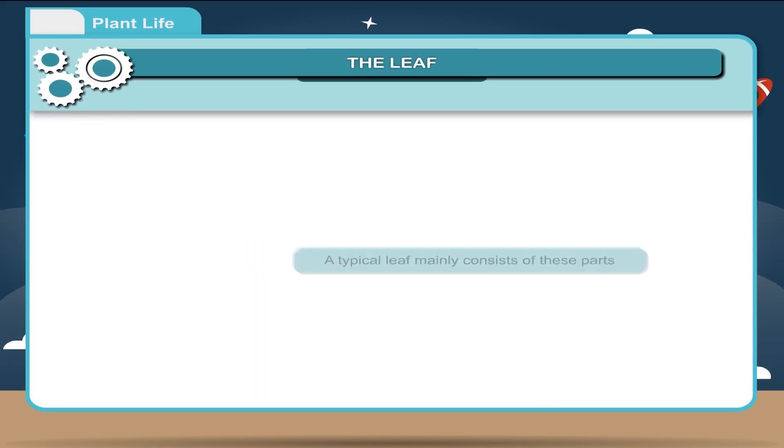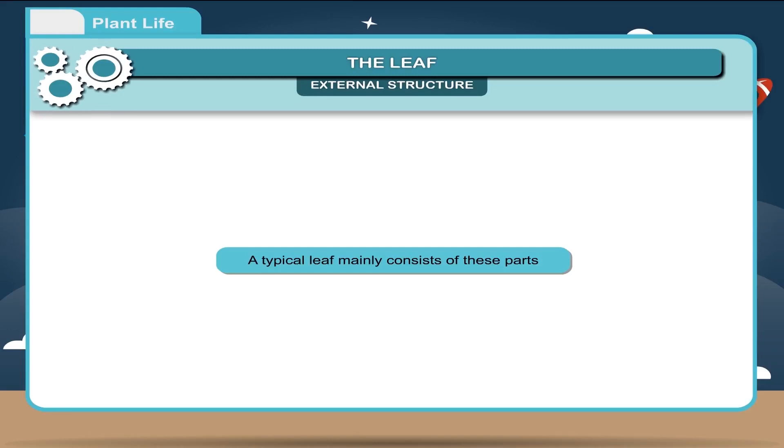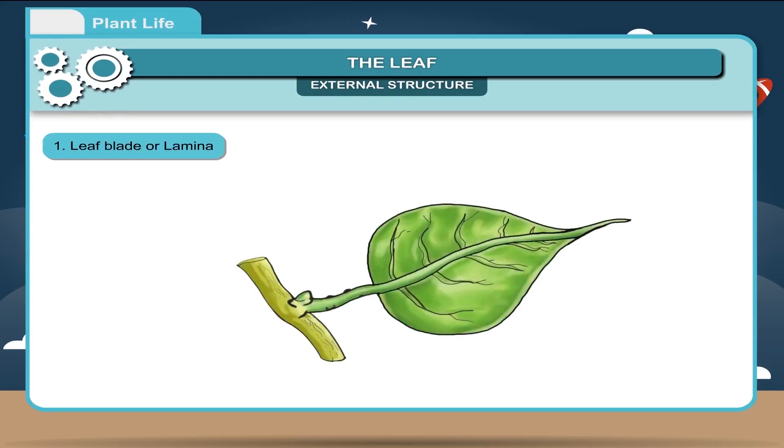External Structure: A typical leaf mainly consists of these parts. First, leaf blade or lamina. The flat, green part of a leaf is called the leaf blade or lamina. It is generally a thin and expanded structure which receives the maximum sunlight.